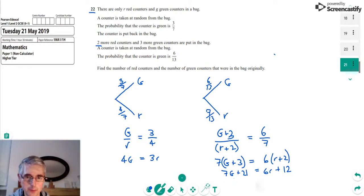We can just tidy that up a little bit. If I take away 12 from both sides, we'll get that 7G plus 9 equals 6R. So we've got two simultaneous equations, this one and this one.